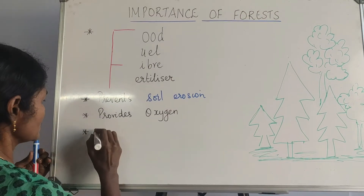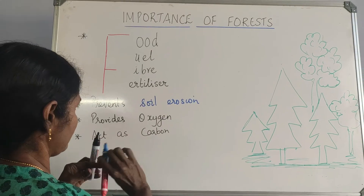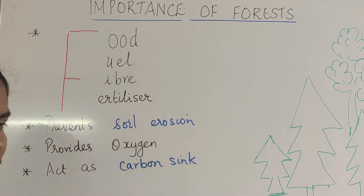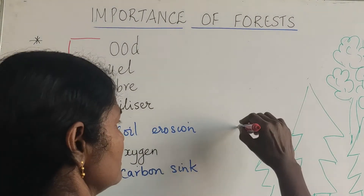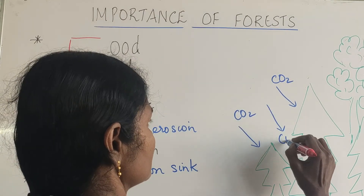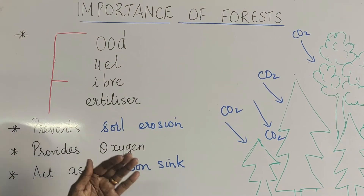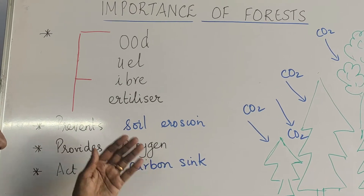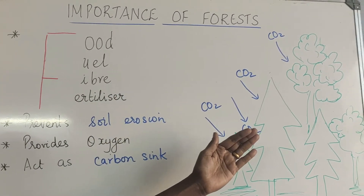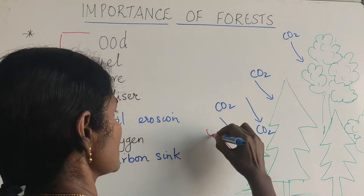These forests or trees also act as a carbon sink. What does carbon sink mean? During photosynthesis, these trees take in carbon dioxide. All the carbon dioxide that is emitted due to the population, vehicles, transportation, and industries — to the maximum extent, it is absorbed by the trees, and that is called a carbon sink. In turn, they give us oxygen.